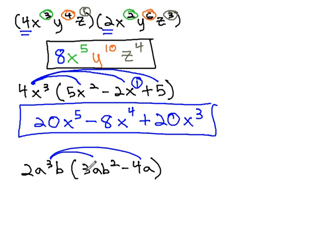As we distribute, we have 2 times 3, or 6. For the a's, we will add the exponents, 3 plus 1 is 4. And on the b's, we will also add the exponents, 1 plus 2, to get 3.